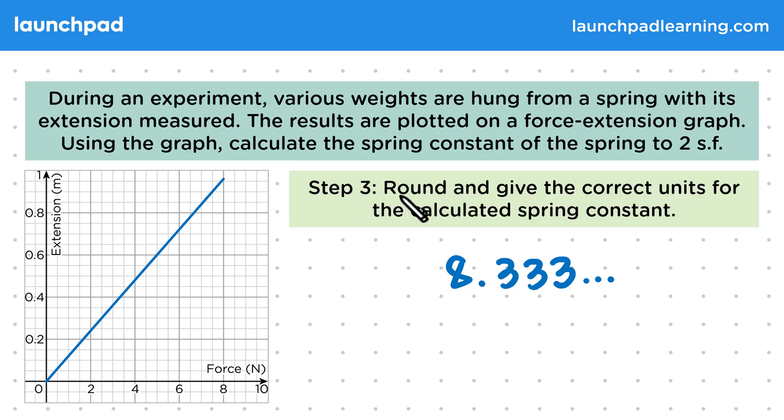Then for step three, we need to round and give the correct units for the calculated spring constant. So that becomes 8.3 to two significant figures, and it's measured in newtons per metre.